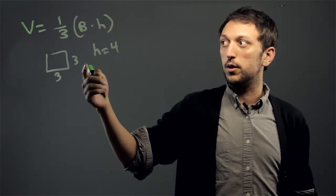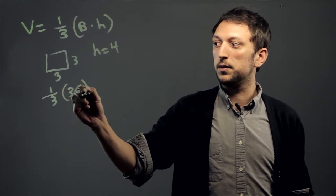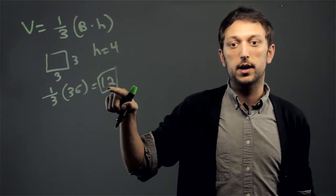times 4, which would be 36. We have one-third times 36, which equals 12. So our volume for the first pyramid is 12.